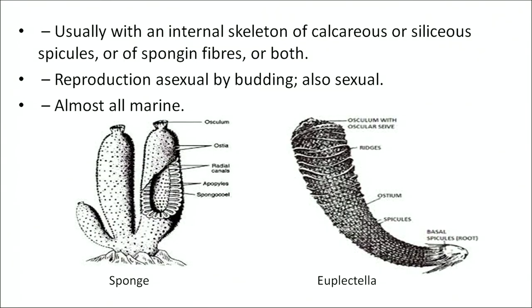Phylum Porifera includes sponges and has several characteristics. The body has many pores, canals, or chambers through which water flows — this is called the canal system. It has a large aperture called the osculum at the upper end, and the body encloses a large cavity called the spongocoel. It has no organs, movable parts, or appendages. Different kinds of cells perform different functions. It usually has an internal skeleton of calcareous or siliceous spicules or spongin fibres. Reproduction is asexual by budding; sexual reproduction also takes place. Examples: Sycon, Euplectella, Euspongia.